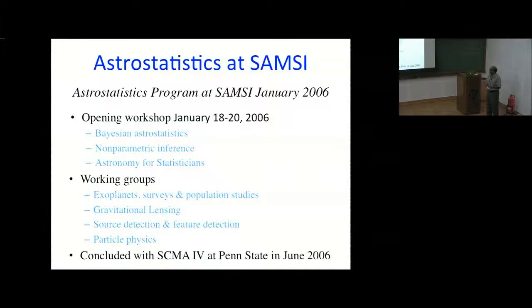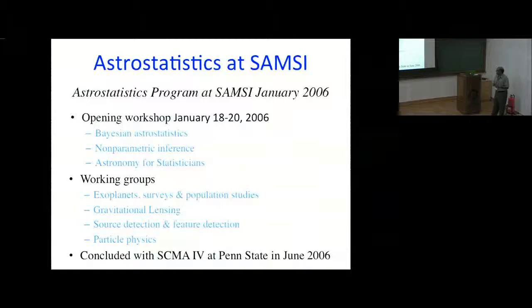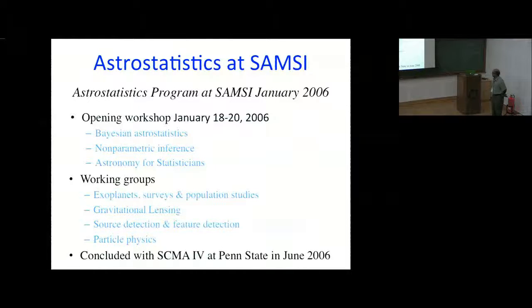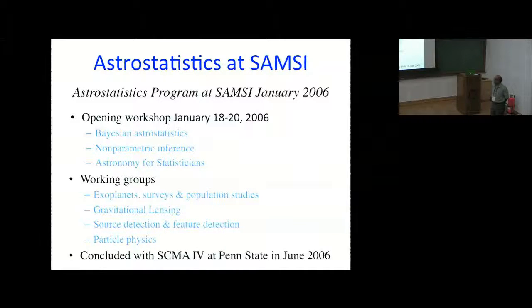Gravitational lensing was another working group, led by Arlie Peters, an applied mathematician. There was also Source Detection, Feature Detection, and Particle Physics, led by Louis Lyons. The program concluded with a transition workshop coinciding with Statistical Challenges in Modern Astronomy — its fourth version — at Penn State in 2006. Since 1991, we have been organizing that conference to bring statisticians and astronomers together, with subsequent ones every five years. The last one was held at CMU, the first time outside Penn State.